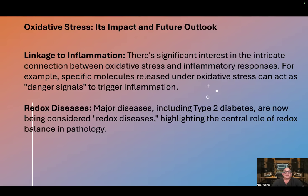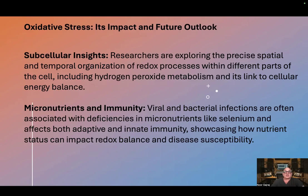There's significant interest in the intricate connection between oxidative stress and inflammatory responses. For example, specific molecules released under oxidative stress can act as danger signals to trigger inflammation. Major diseases including type 2 diabetes are now being considered redox diseases, highlighting the central role of redox balance in pathology. Researchers are also exploring the precise spatial and temporal organization of redox processes within different parts of the cell, including hydrogen peroxide metabolism and its link to cellular energy balance.